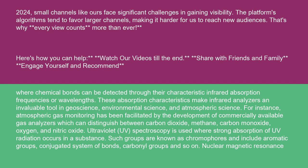Ultraviolet UV spectroscopy is used where strong absorption of UV radiation occurs in a substance. Such groups are known as chromophores and include aromatic groups, conjugated systems of bonds, carbonyl groups, and so on.